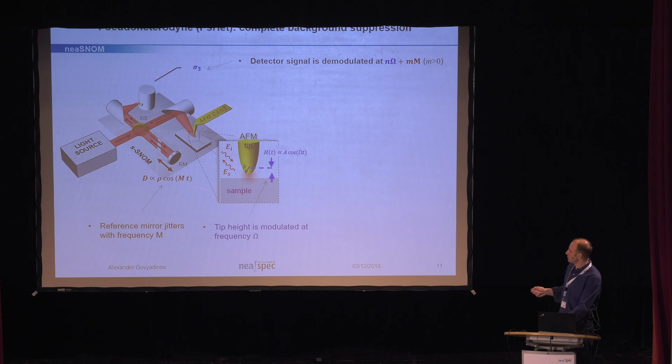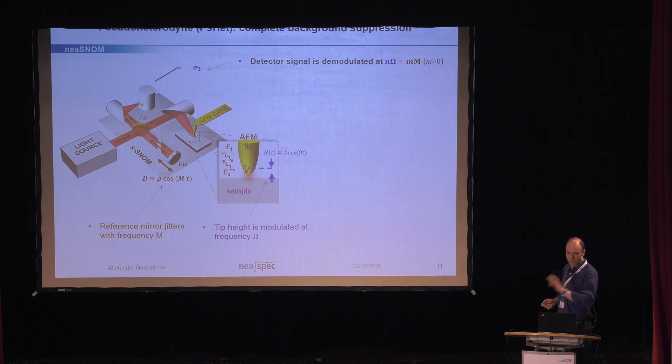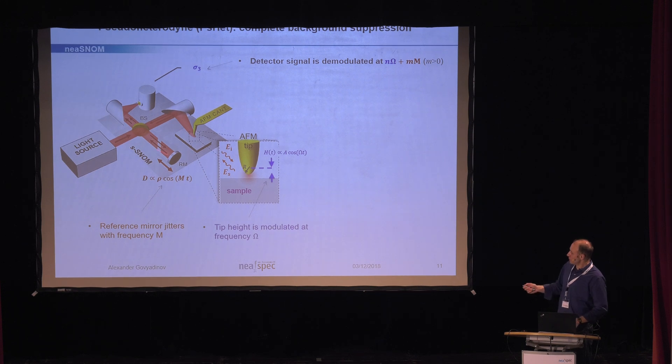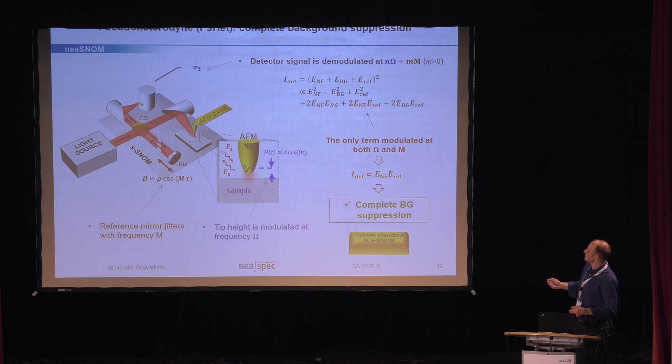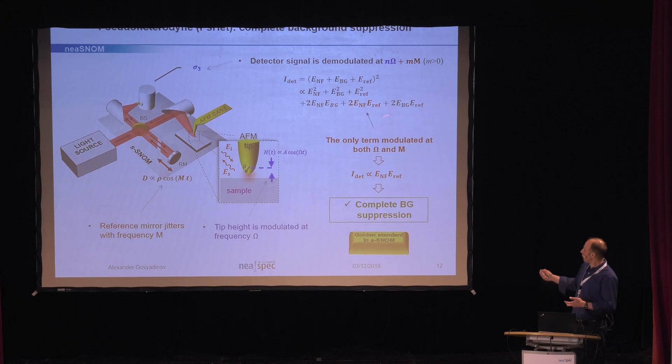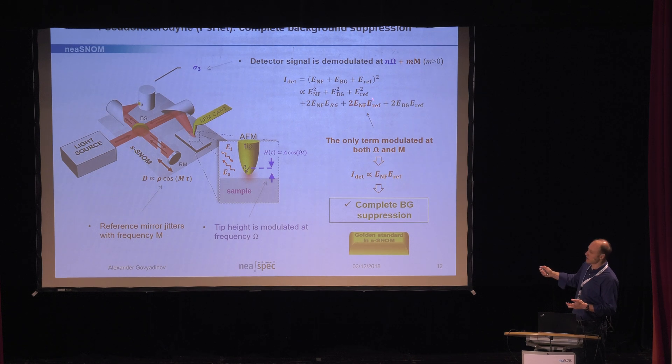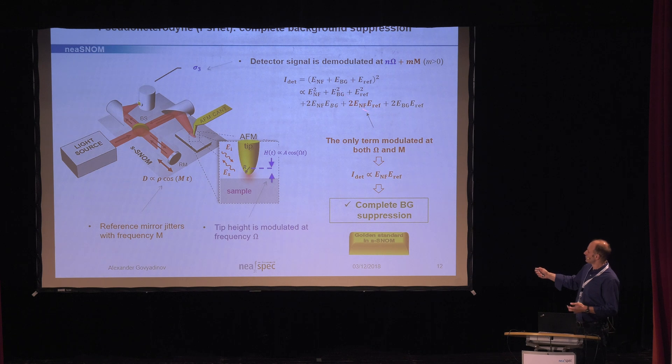How is it removed? So, remember I told you that there is an interferometer, right? And we will make use of the fact that there is an interferometer. We jitter the reference mirror harmonically also. And then, we demodulate the detector signal at the sum frequency of the tip tapping plus the jittering frequency of the mirror. This is a so-called pseudo-heterodyne technique and this is what happens. So, now we have to add the reference, of course. We have all the bunch of terms if we square it, basic algebra, but only one term here will be modulated at the mirror jittering frequency and the tip jittering frequency. So, only one, and this is this product of near field times the reference. In other words, there's no background anymore here.